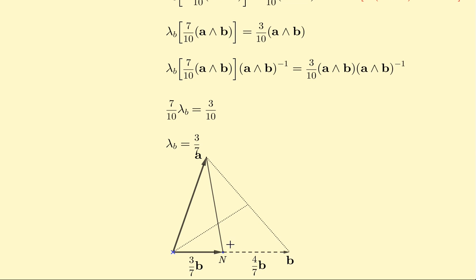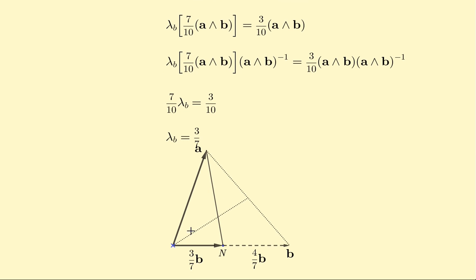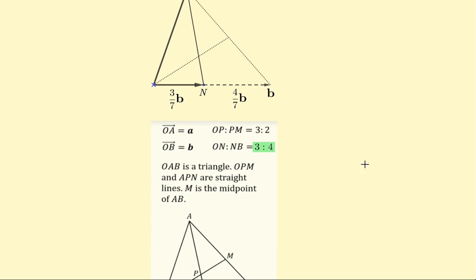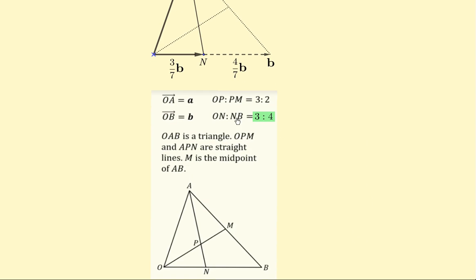Now, going back to our original diagram here, if this length is three-sevenths of the vector B, that means that this has to be four-sevenths, which means that the ratio that we seek is three to four.